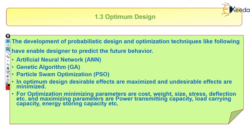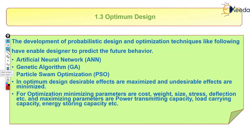In optimum design, the desirable effects are maximized and the undesirable effects are minimized. Whatever we want is maximized, and whatever we don't want is minimized. For example, we want more strength — so strength is maximized — and we don't want failure — so the failure part is minimized and the success part is increased.